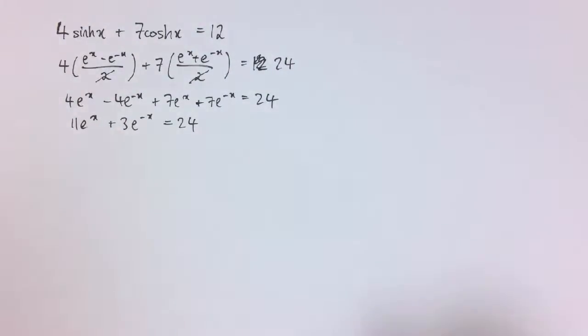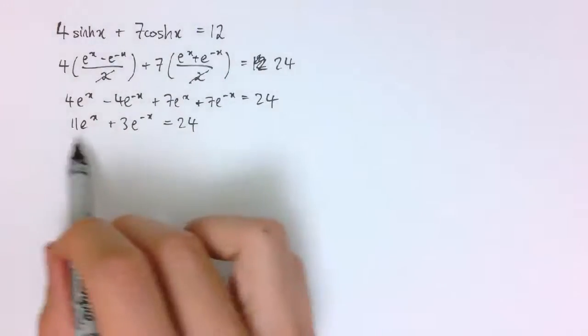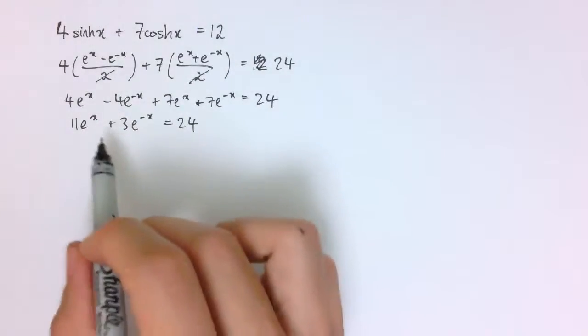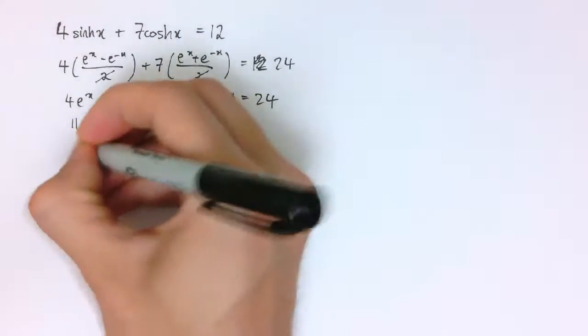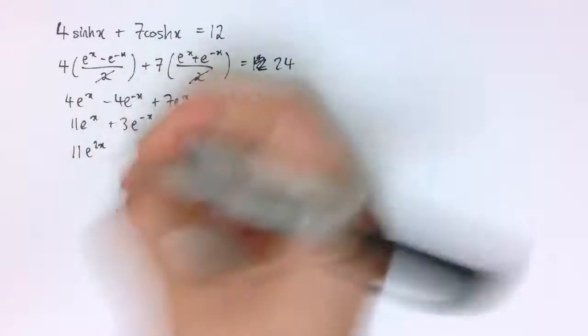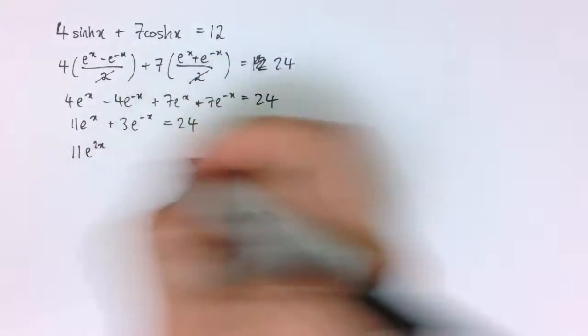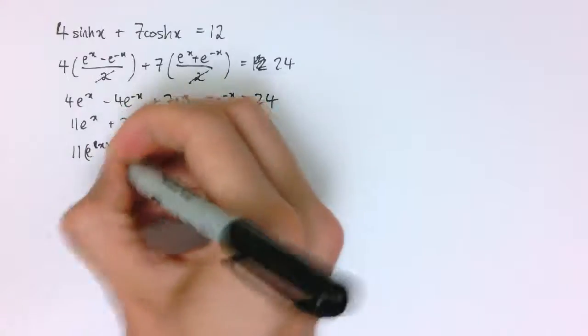Not immediately helpful perhaps, but it is because we can recognize that this is actually a disguised quadratic equation in e^x. So what I mean by that is if we multiply this all through by e^x I'll get 11(e^x)² in fact, let me leave it as 11(e^x)².